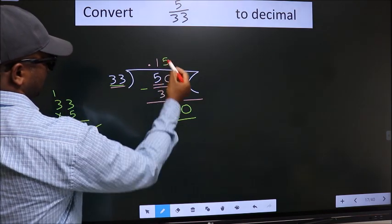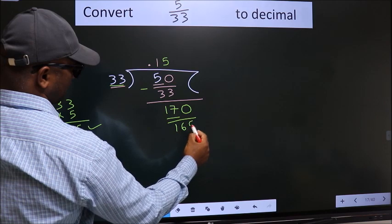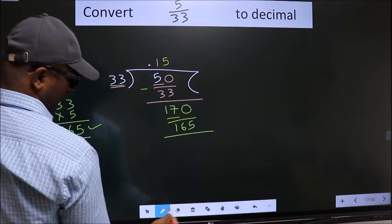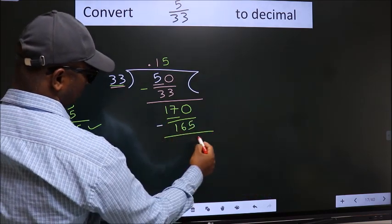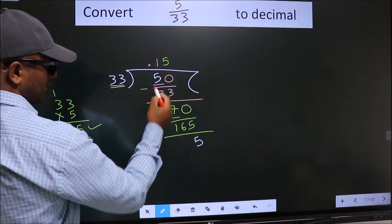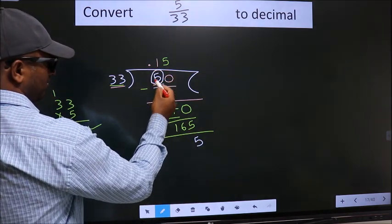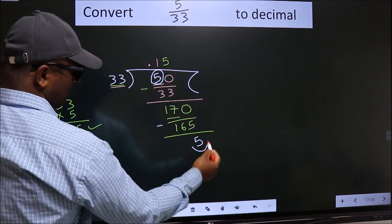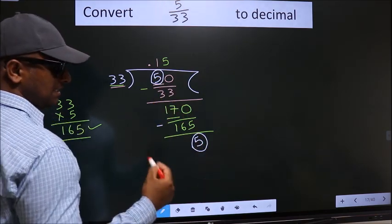So, 5 times 165. Now, subtract. We get 5. Now, here you see, we had 5 before. We got 5 again.